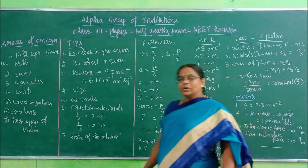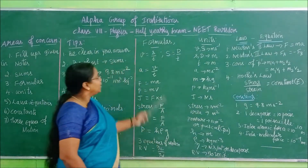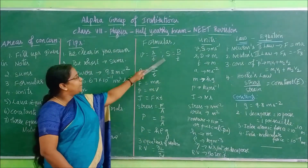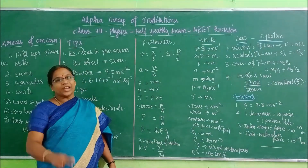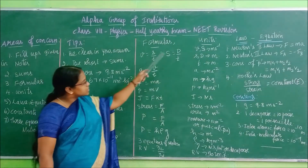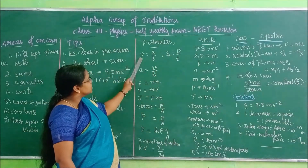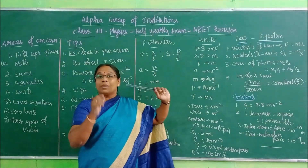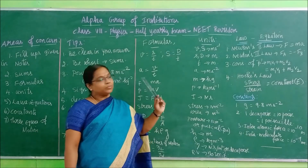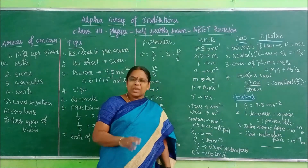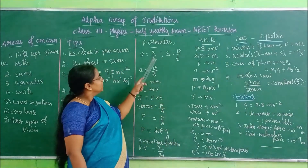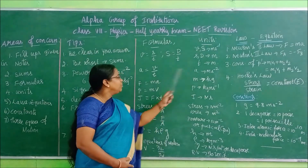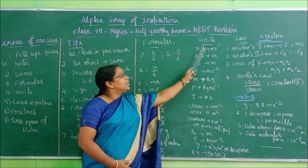Now come to the main part - formulas and units. I have simultaneously tabulated here. Velocity is equal to displacement by time; speed is equal to distance by time. Here speed is capital S and displacement is small s, to differentiate. I have tabulated the units: for velocity and speed, the unit is meters per second. Next, acceleration is equal to velocity by time; acceleration unit is meters per second square; time unit is seconds; velocity unit is meters per second.